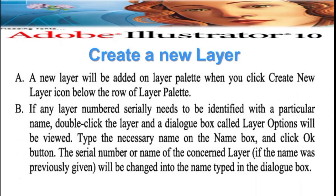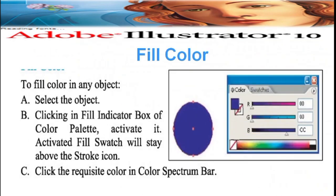Create a new layer: a new layer will be added in the layer palette. These palettes are situated on the right side. When you click the new layer icon below the row of the layer palette, a new layer is added. Layer numbers are identified serially; to give a particular name, double-click the layer and a dialog box called Layer Options will appear. Type the desired name in the dialog box.